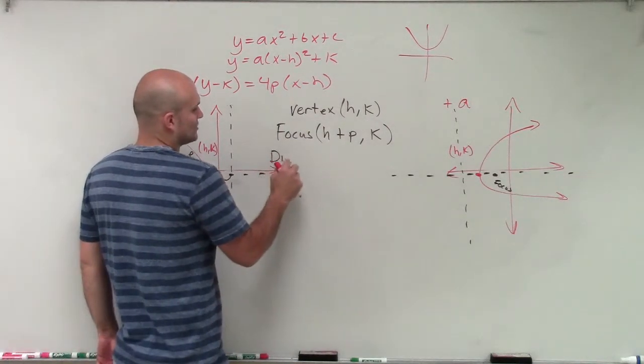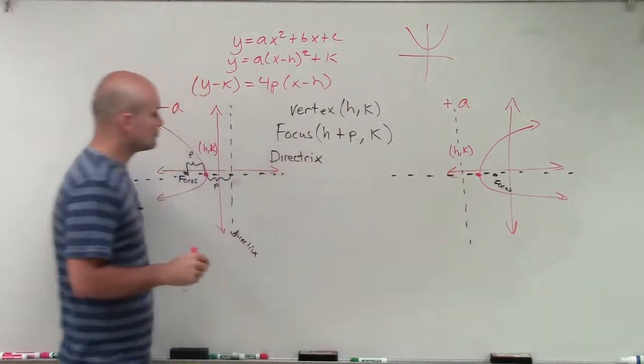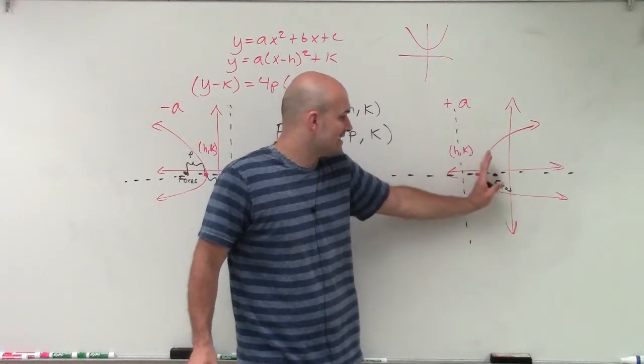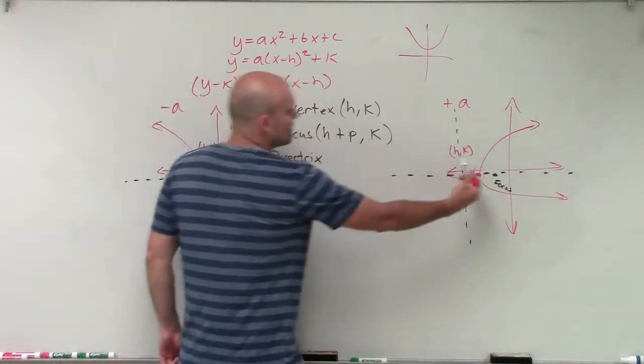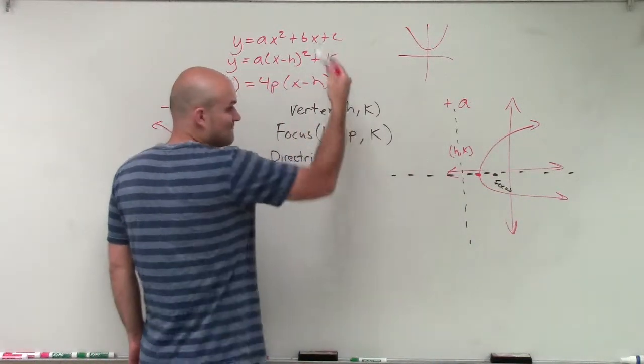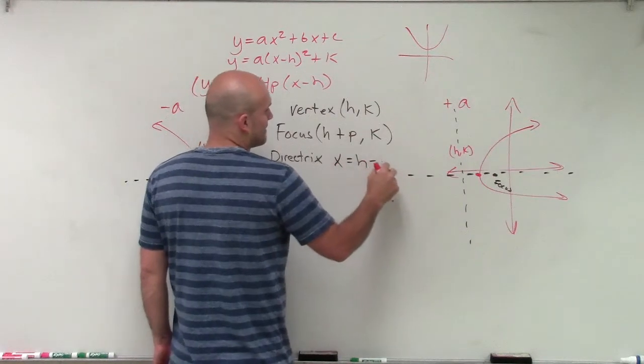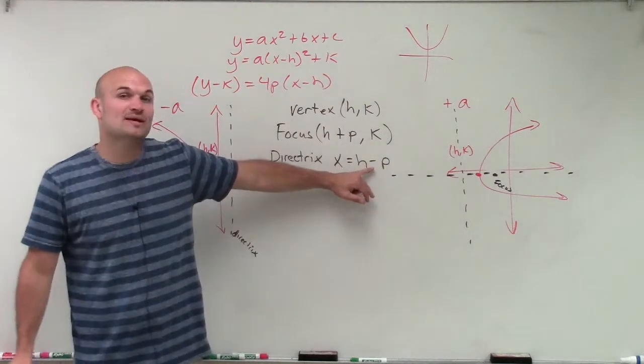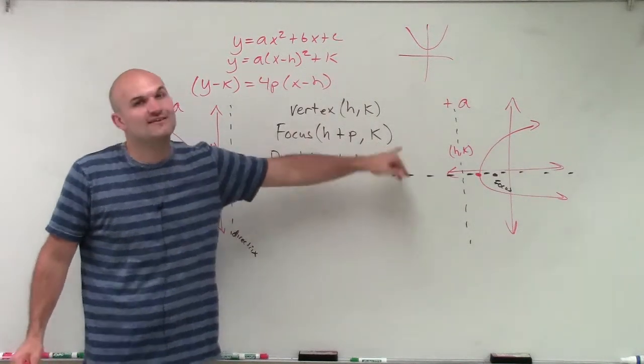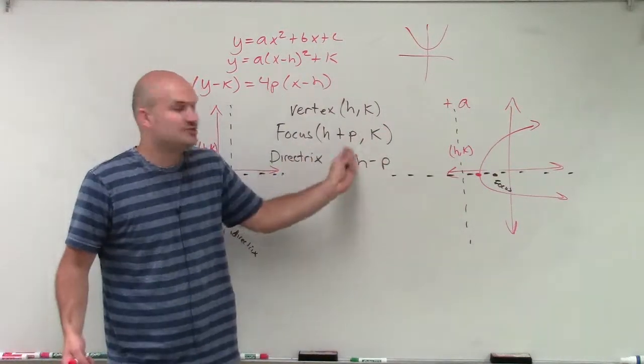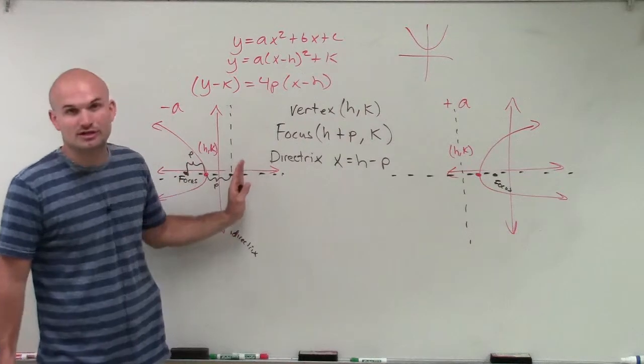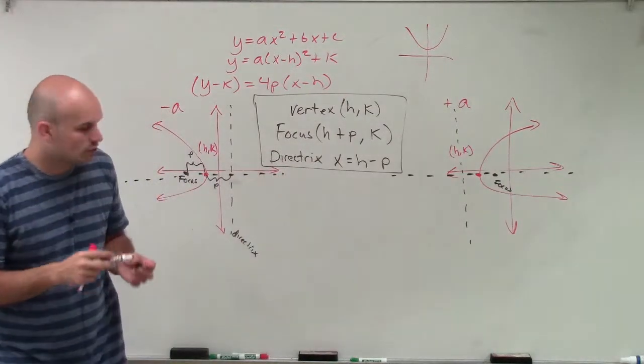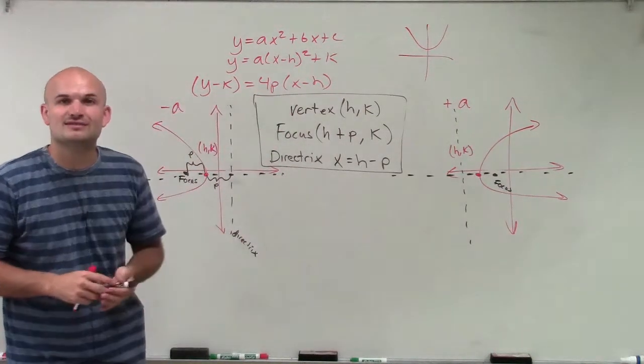Now let's find the directrix. So if I notice I'm adding it to find the focus, I need to go in the opposite direction to find the directrix. So my directrix, however, notice it's still horizontal, is going to be a vertical line, which means X equals H minus P. And again, if my P was negative, it would be H minus a negative P. Well, minus a negative would be a double negative, which means it would be adding it, which that's the reason why we'd move in the positive direction. However, when you have a horizontal parabola, here's your general rule that you can use to be able to determine your vertex, focus, and directrix.